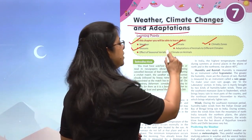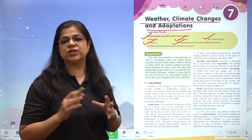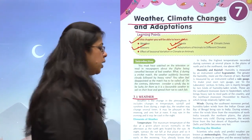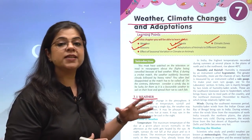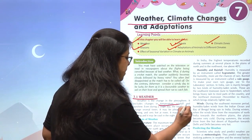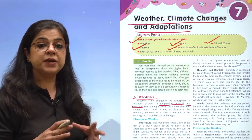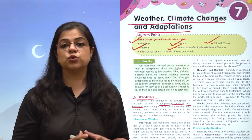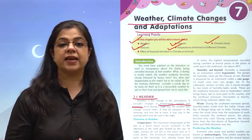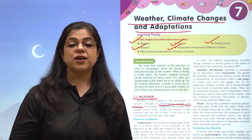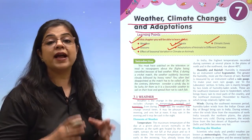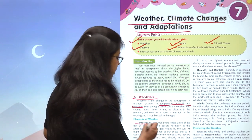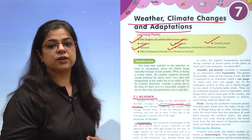Sab se pehle baat karte hain weather ki. Weather is the change in the atmosphere which includes temperature, rainfall, and sunshine. If it is cloudy outside, you call it a cloudy day; agar bahar bohut tez dhup hai toh it's a sunny day; and if it is raining, it's a rainy day. These are the conditions that affect weather, and weather changes from day to day.